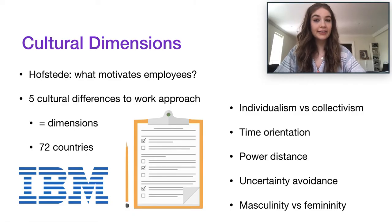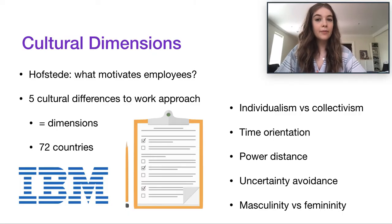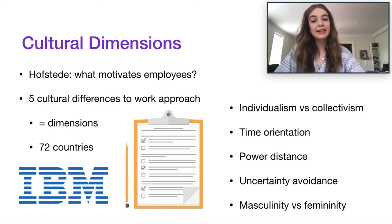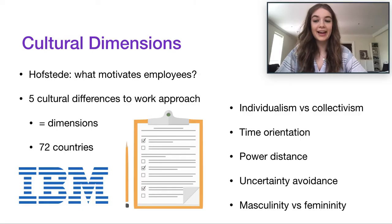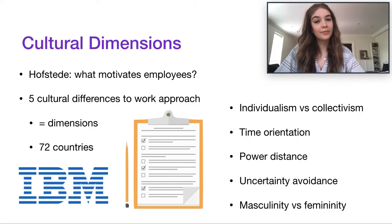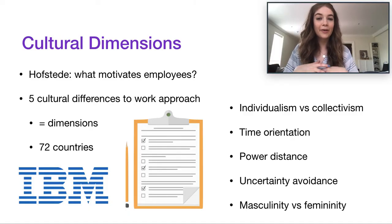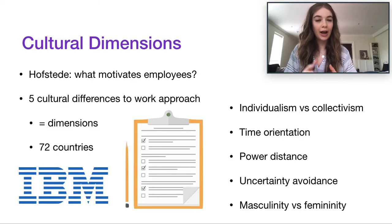By 2001, he had gathered all this data across all the countries and found five major themes — five major work-related trends. Today we'll discuss two of them specifically: individualism versus collectivism, and time orientation — short-term versus long-term. It's good to be aware that there are five dimensions total. Beyond individualism/collectivism and time orientation, there's also power distance.